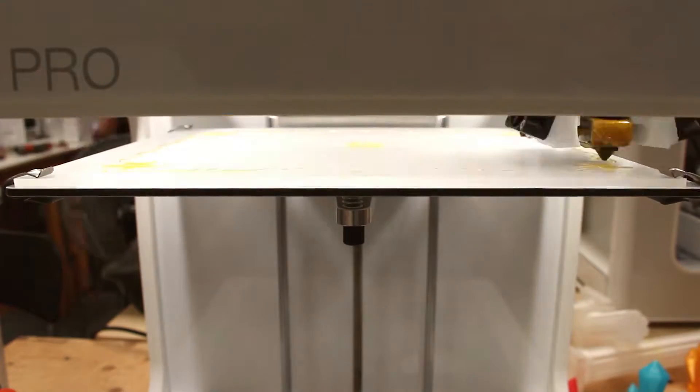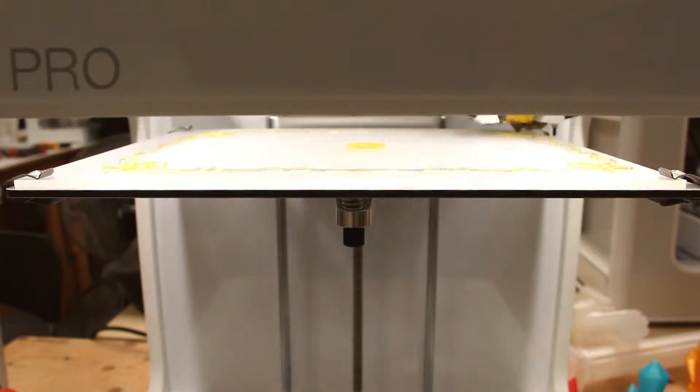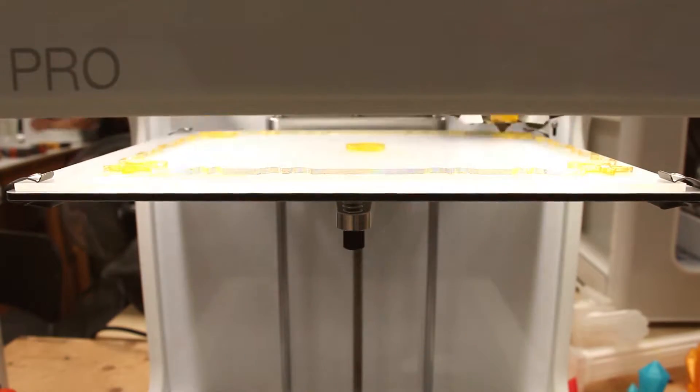We also tried printing out a perimeter on the acrylic sheet. All four corners are sticking well. It looks pretty good so far.